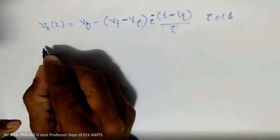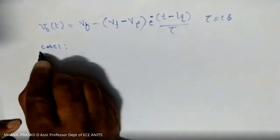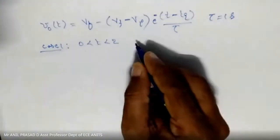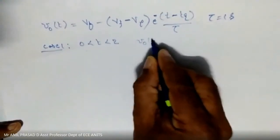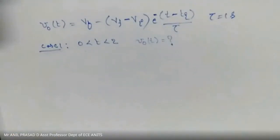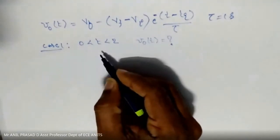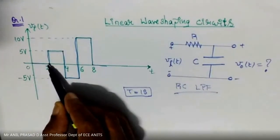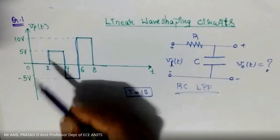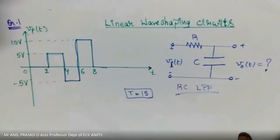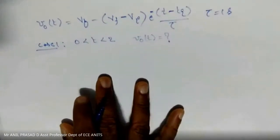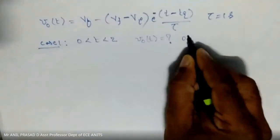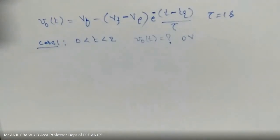Let us consider Case 1, over the interval zero to two. Over this interval, what is the input signal? The input is zero. When the input is zero, the output is also zero. So over the interval zero to two, the output is zero volts — no input, no output.